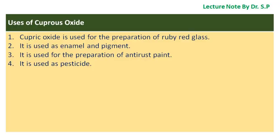Uses of cuprous oxide: Cuprous oxide is used for the preparation of ruby red glass. It is used as enamel and pigment. It is used for the preparation of anti-rust paint. It is also used as a pesticide.